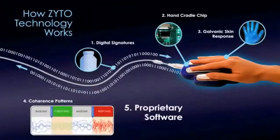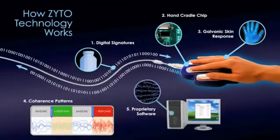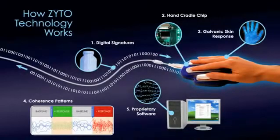The data received from the hand cradle is plotted and analyzed for coherence. Each response is given a positive or negative score called a deviation ratio, or DR.